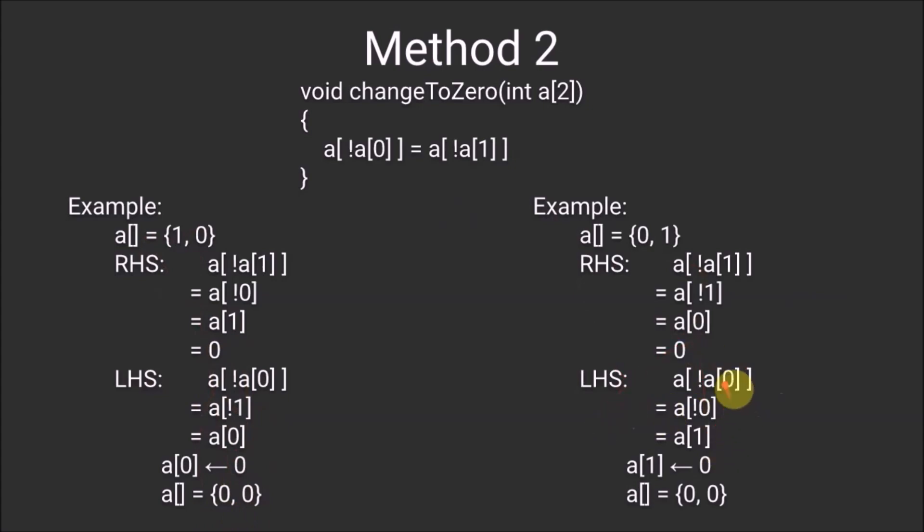In the second example, we have A[0] which is 0. We find the complement of 0 which will be 1, and then we assign 0 which is the RHS at the first index of the array to get the array 0, 0.